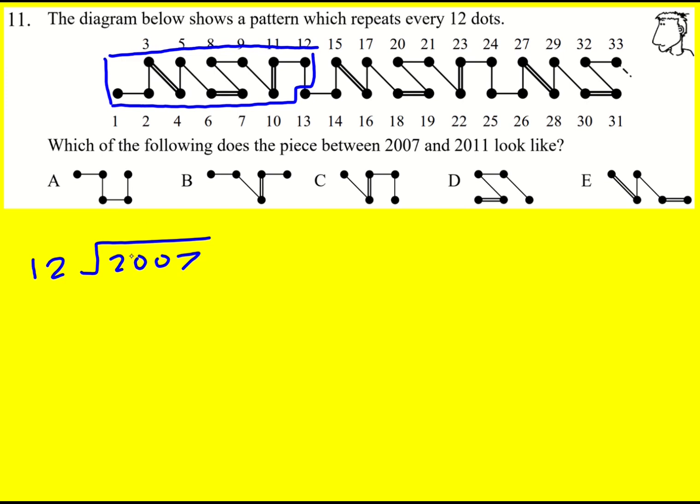So 12s into 2007, or 12s into 20 go once remainder 8, then 12 times 6 is 72 so 6 remainder 8, and 12 times 7 is 84, so we get 167 remainder 3.